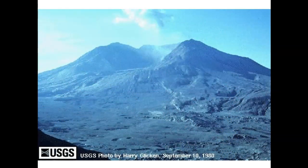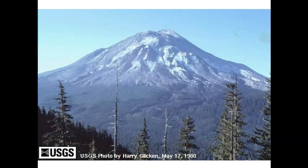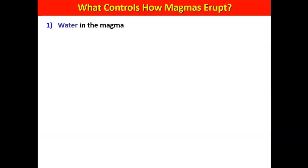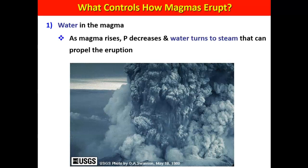Mount St. Helens is a famous volcano that erupted relatively recently. Images of before and after show the amount of power some volcanoes have — going from something like that to that takes a lot of energy. What we want to look at is what's causing these types of eruptions. We know there are more violent eruptions ejecting a lot of material, but also more fluid lava eruptions like those seen in Hawaii.